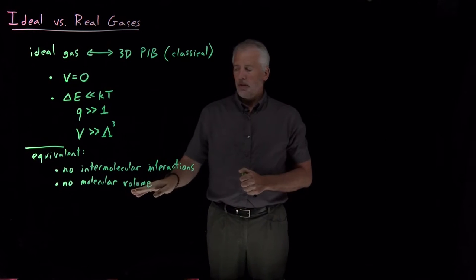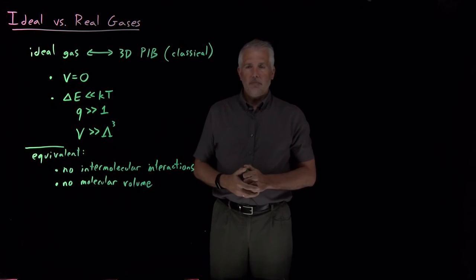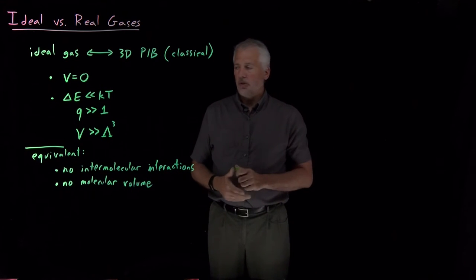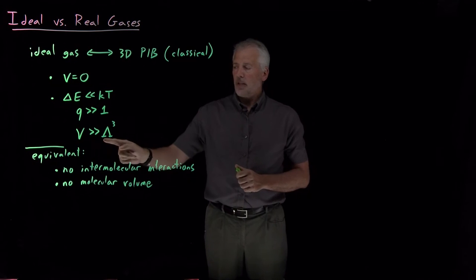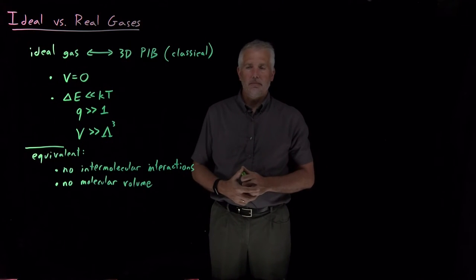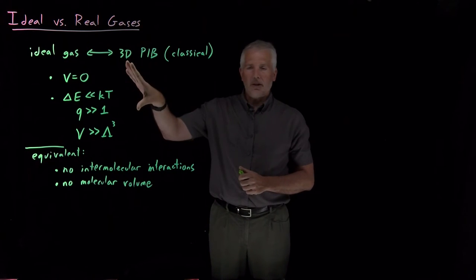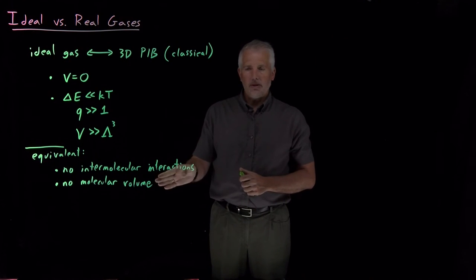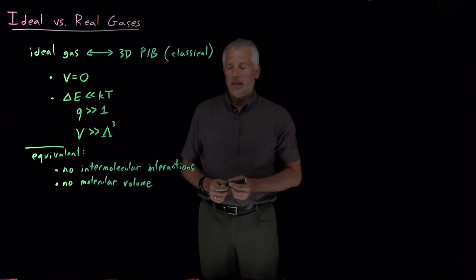The assumption of no molecular volume, the volume of each individual molecule is zero, that's equivalent to this expression that the thermal de Broglie wavelength, the size of the individual molecules, needs to be small compared to the size of the box that they are confined in. So these are just more mathematical ways of expressing what may be somewhat familiar assumptions about the ideal gas.